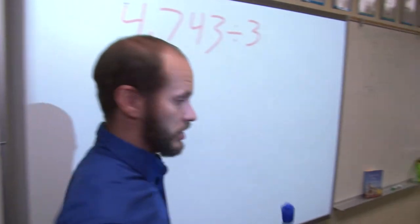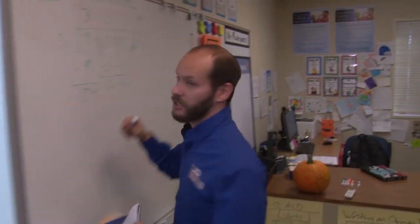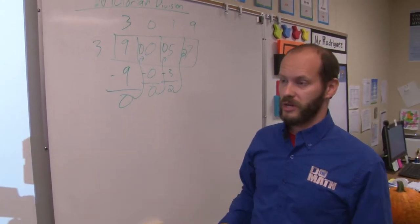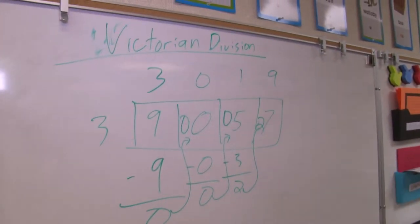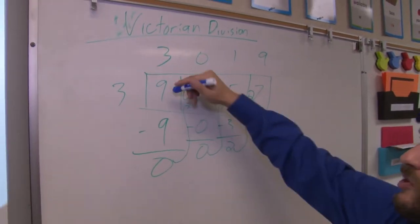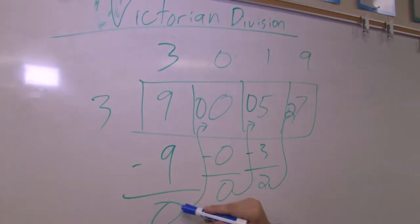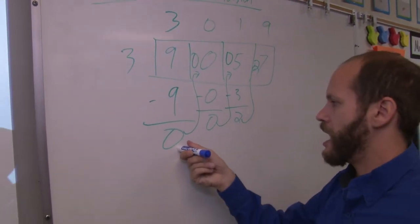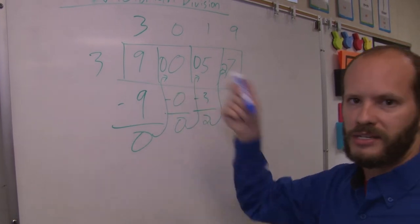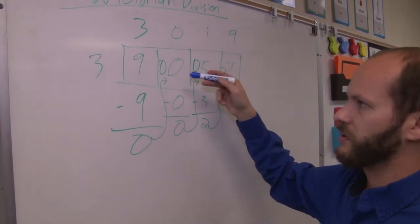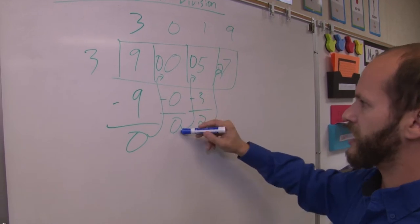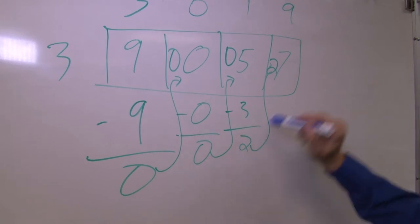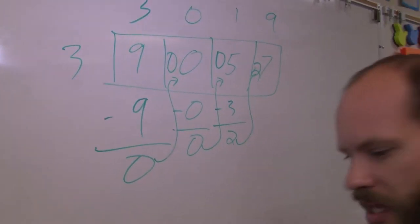One of our students, by the name of Victoria, introduced us to a method that involved space saving but allowed for some similarities with the standard algorithm. We call it the Victorian division algorithm. We still do three into nine three times and subtract, but instead of continuing downward, we take this value and bring it into the tens place of whatever the next digit is. We are doing the same division, but in a much more streamlined manner.